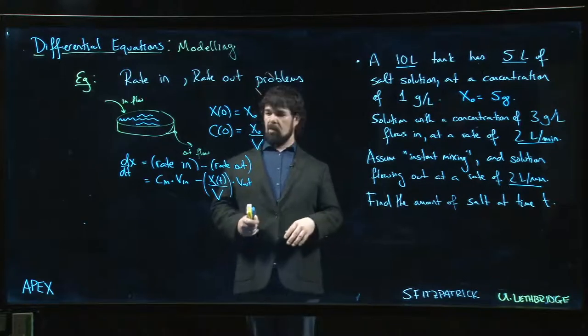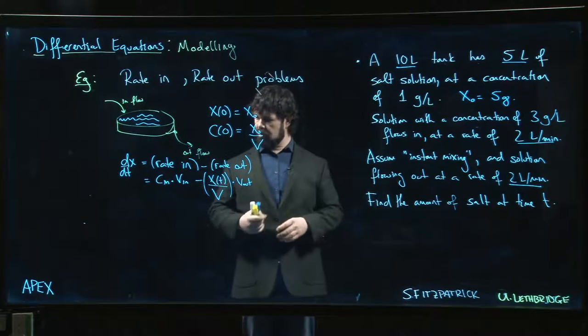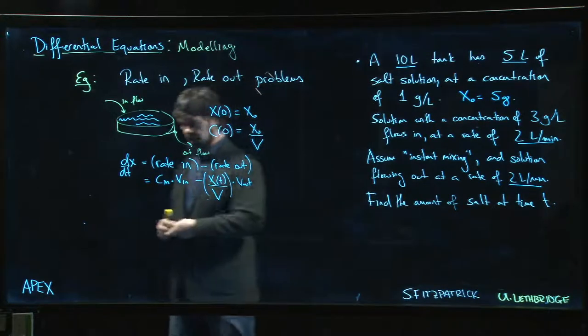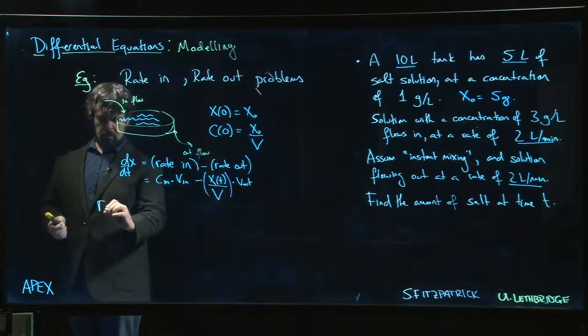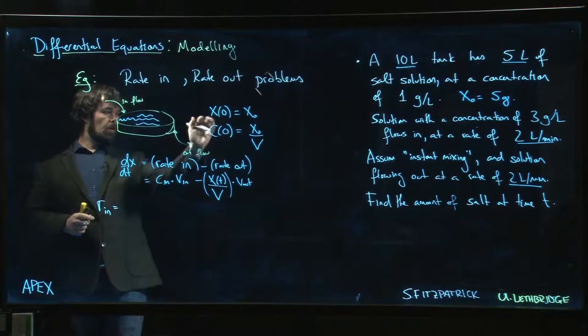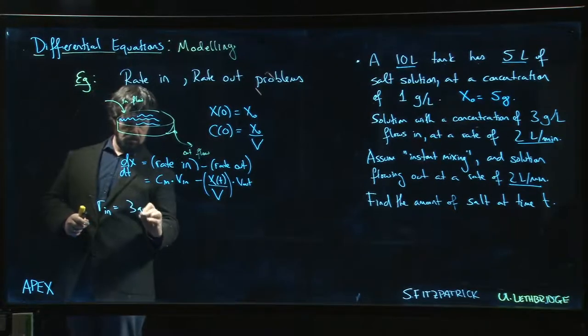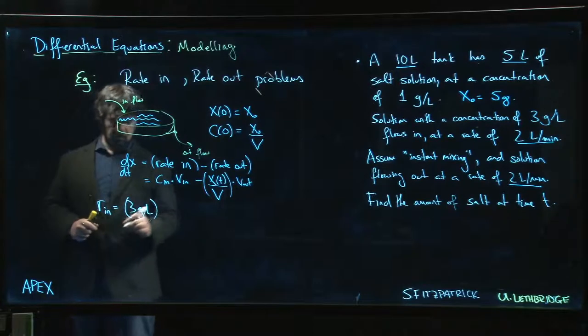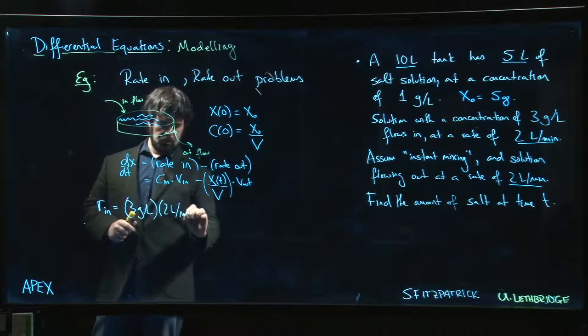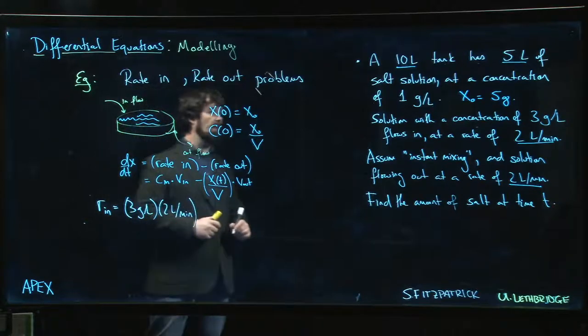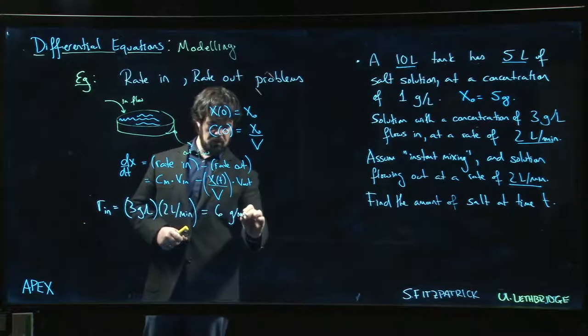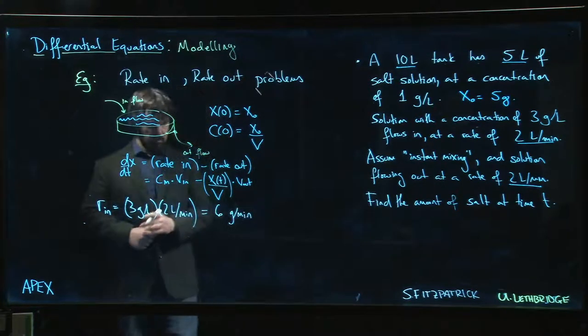All right, with all that out of the way, let's see if we can solve this. What do we know? We need first of all, what is the rate in? Let's think about that. The rate in for our problem, we'll just call it R_in, is the concentration coming in - three grams per liter - times the rate at which that solution is flowing in, which is two liters per minute. So that gives me a rate of six grams per minute coming in.